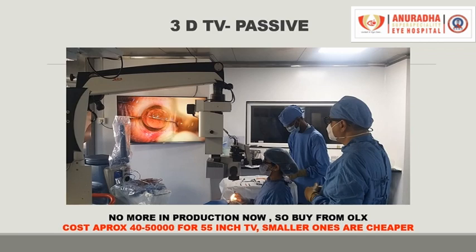One important component of the 3D CCTV system is the 3D TV. There are two types: passive and active. I would suggest you go for passive TVs manufactured by LG. They are no longer manufactured and not available in the market after 2016, so you will have to buy them from the second-hand market — the best place is OLX.com. They are usually available from 32 to 55 inches and are quite cheap.